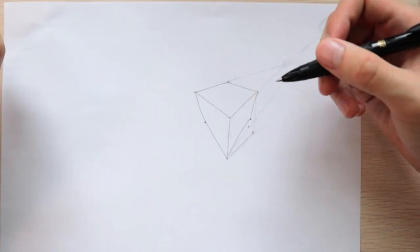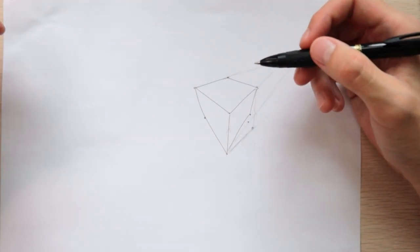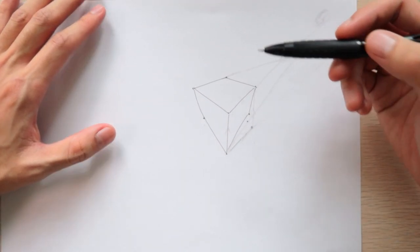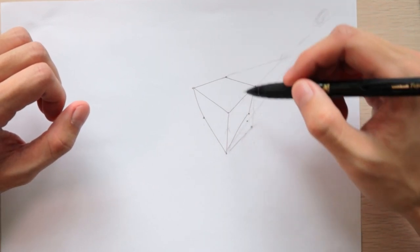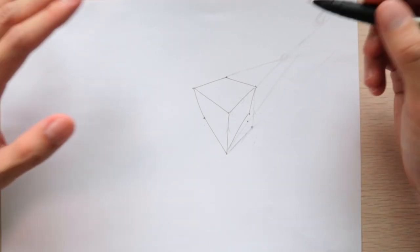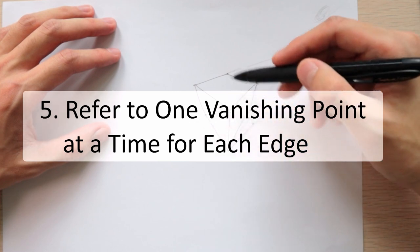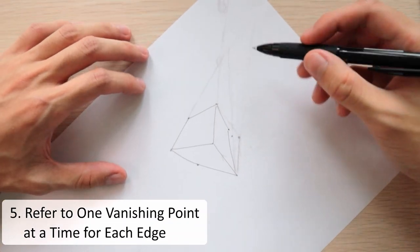Okay, so finally we need to do the inside or the rear corner. This is the most difficult corner to place because it's affected by all three vanishing points at once. So when you place your dot, you want to make sure that it lines up with all the vanishing points. One thing you can do is look at one vanishing point at a time and try to establish where the dot is.